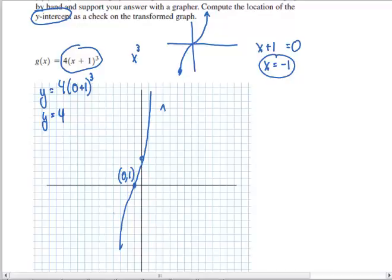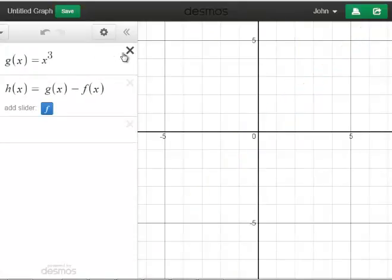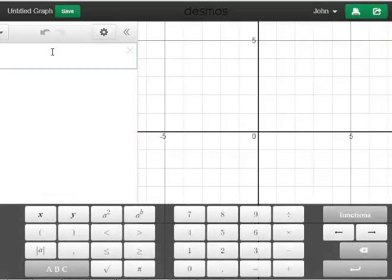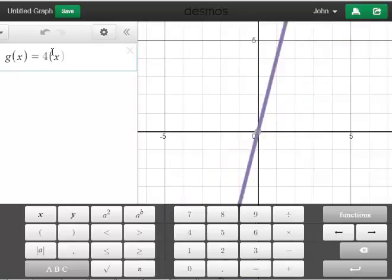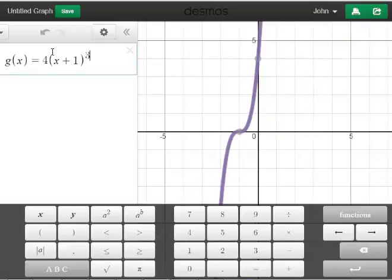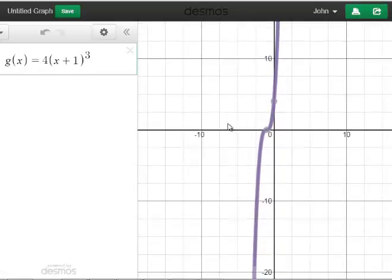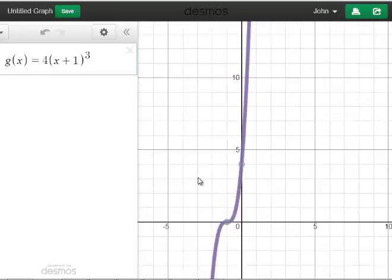If I were to go to Desmos and graph this, I would see that that function looks pretty close. I'll put in g(x) = 4(x + 1)³. You can see here that I have my zero at (-1, 0) and my y-intercept at (0, 4). So my hand sketch is pretty accurate compared to what Desmos would provide.